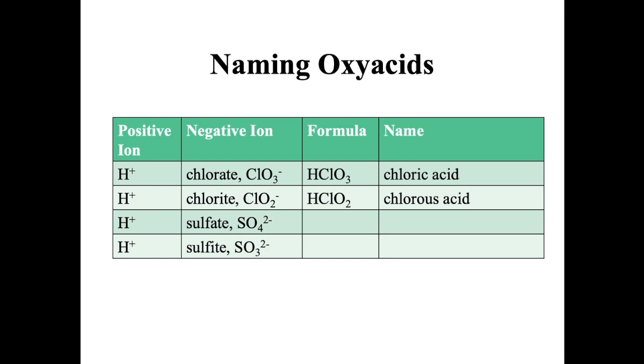So if we look at some examples, our first one, a hydrogen ion and a chlorate ion combine to form HClO3. Since the anion ended in A-T-E, we make it chloric acid. On the other hand, if hydrogen combines with the chlorite ion, HClO2, since the anion ended in I-T-E, we change the ending to O-U-S, and it becomes chlorous acid.